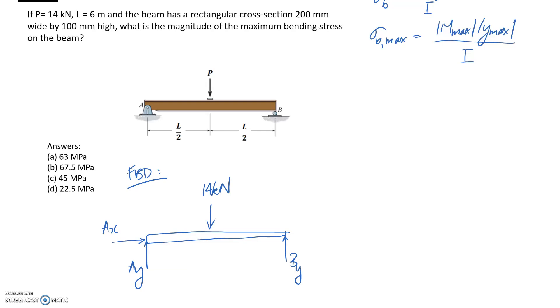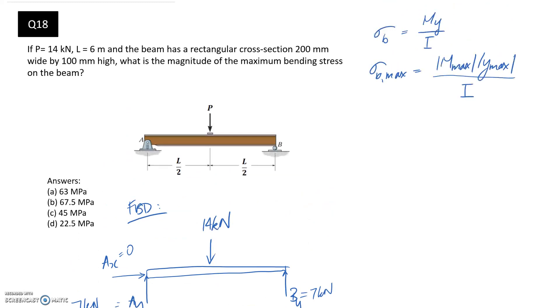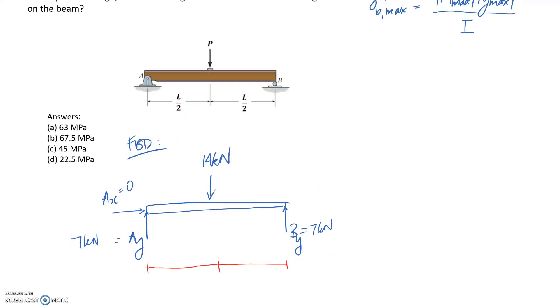So if you want, you can go ahead and use your equilibrium equations to prove that. But I'm just going to jot it in. So that means this is 7 and this is 7. And since there's nothing applied in the x direction, Ax is equal to 0. So that's our complete free body diagram. I might just mark in our dimensions to make it easier in a moment. So we've got L on 2 on either side here and L is equal to 6. So that means that each side is 3 meters.